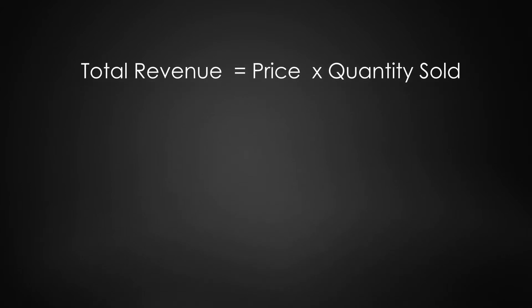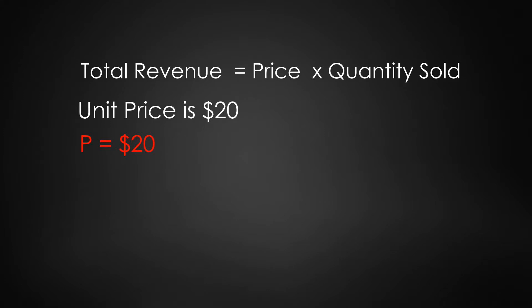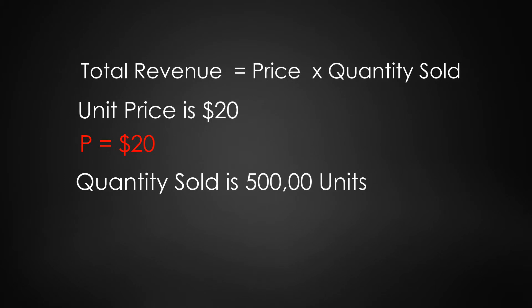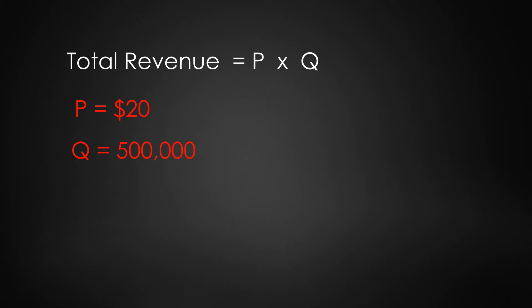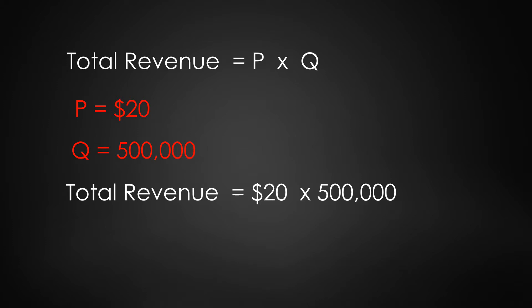Let's start with total revenue. This is calculated by taking price times the quantity sold. Let's say we sell our product at a unit price of $20 — let's use P for price, so P equals $20. And let's say we sell 500,000 units, so Q, quantity sold, is 500,000. To calculate total revenue, we multiply P times Q, so 20 times 500,000 is a total revenue of $10,000,000.